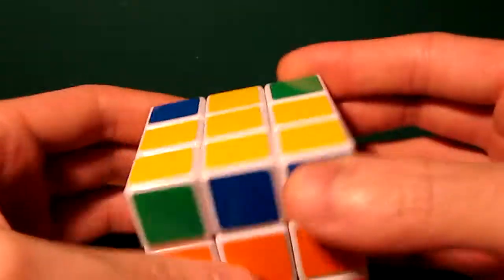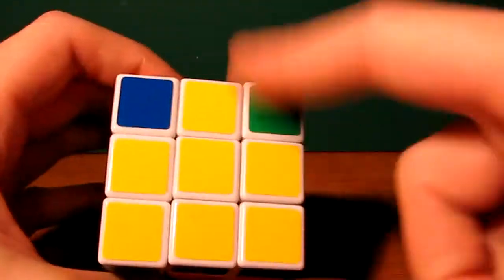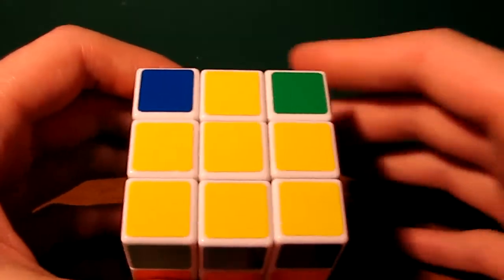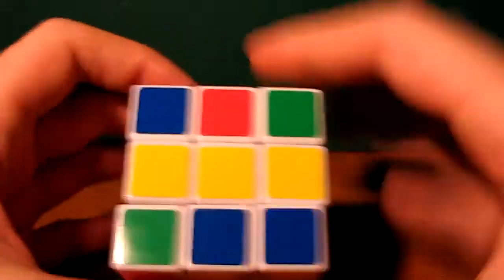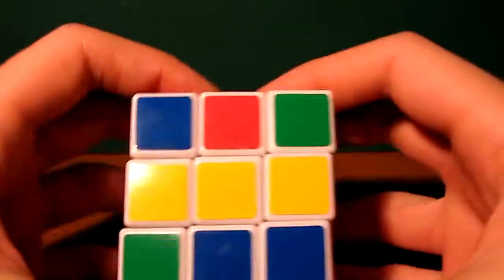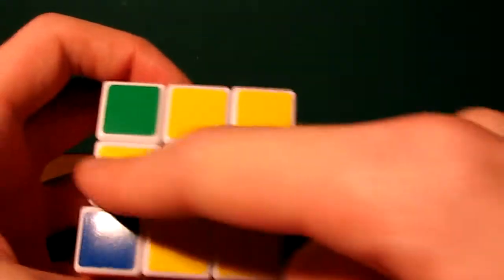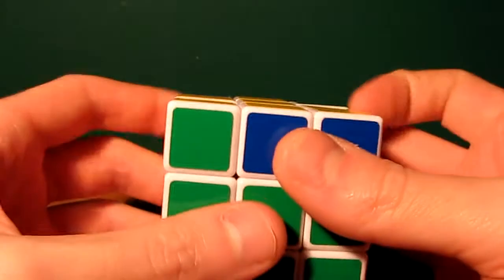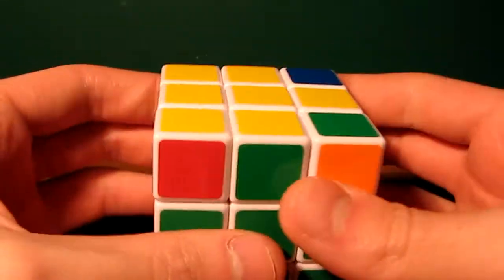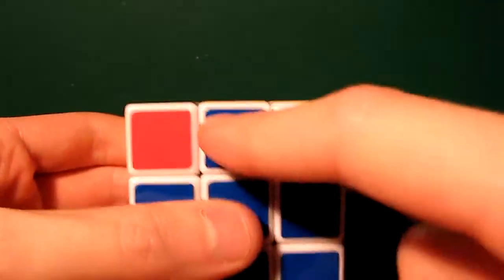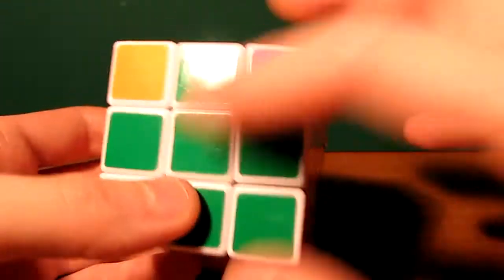Now after that, all we have is the last layer. And the first thing you're going to want to do is make the cross. Here we already have it so I don't have to do anything. But just for sake of example, I'll make the cross. See here we have a line. Now we have a cross. Next thing after that is to make sure the cross pieces are in the right place. And now they are. We have the cross pieces in the right place.